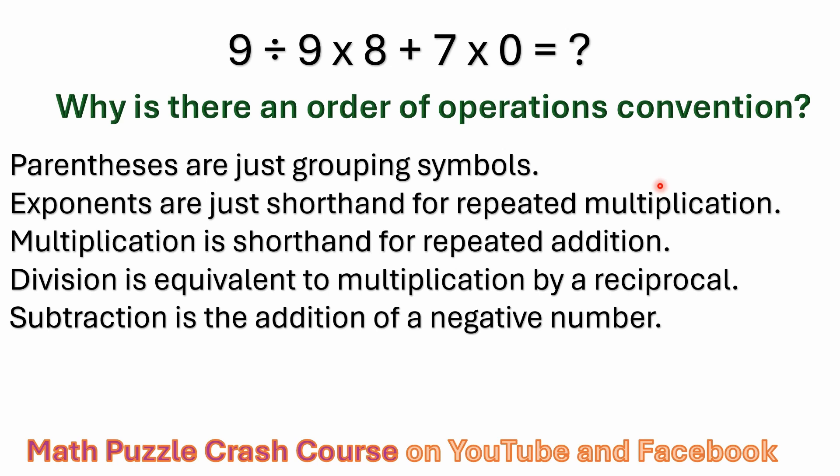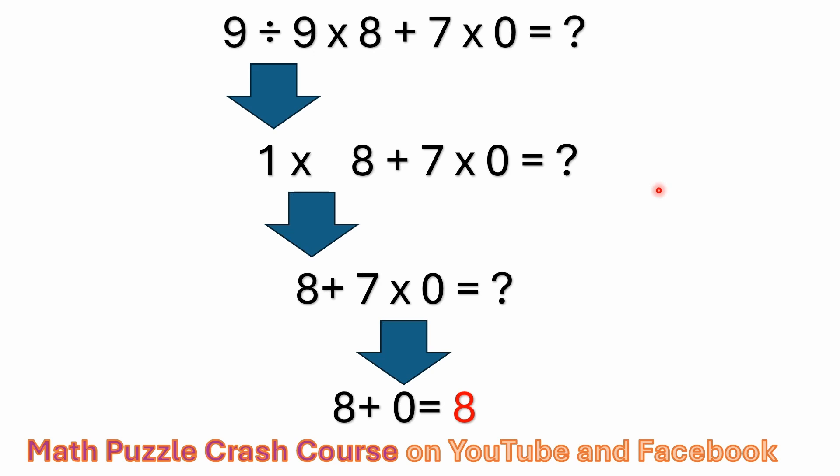Exponents is just shorthand for repeated multiplication. Multiplication is shorthand for repeated addition, right? It's easier to write five times five than it is to write five plus five plus five plus five. You can see how your hand's going to get cramped or your fingers are going to get sore. Division is equivalent to multiplication by a reciprocal. Division and multiplication have equal precedents. And again, subtraction is just the addition of a negative number. So that fourth step addition and subtraction have equal precedents. If people would understand these basic concepts, we wouldn't have some of this confusion where people are memorizing six letters and doing some really crazy things.